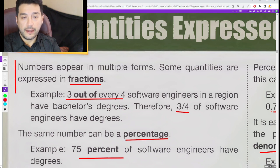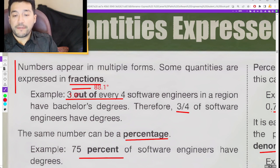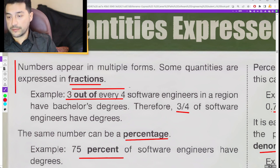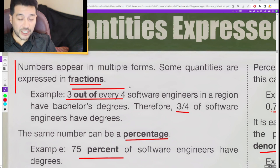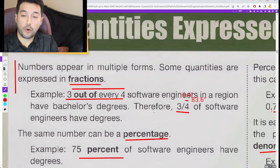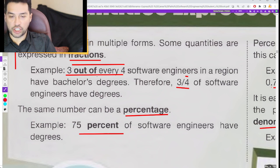Numbers appear in multiple forms. Some quantities are expressed in fractions. Example: 3 out of every 4 software engineers in a region have bachelor's degrees. Therefore 3 over 4 or 3 quarters of software engineers have degrees. 3 quarters, 3 out of every 4. The same number can be a percentage. Example 75% of software engineers have degrees.